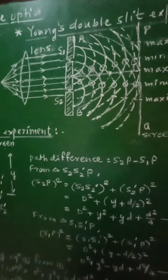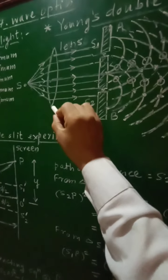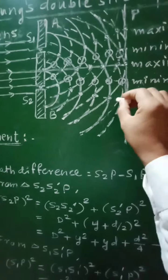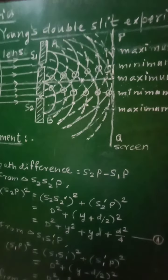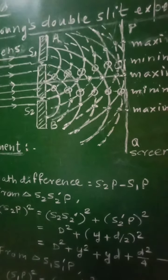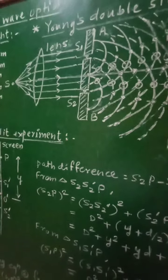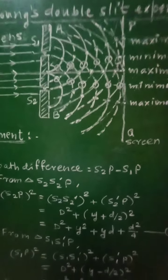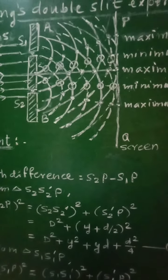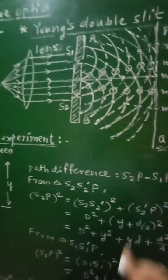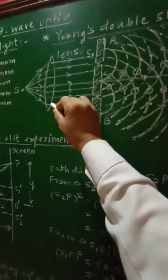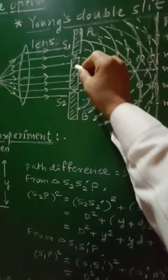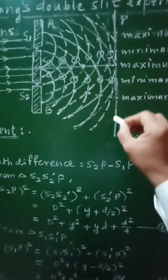Initially this experiment was carried out using sunlight as the source, with pinholes used in place of S1 and S2. The interference pattern observed was a colored pattern since sunlight is not monochromatic. To study interference properly, the light waves from S1 and S2 must be monochromatic — having a single wavelength. Therefore sunlight was replaced by a monochromatic source such as a sodium vapor lamp, and the pinholes were replaced by two slits S1 and S2, giving a clear interference pattern on the screen.